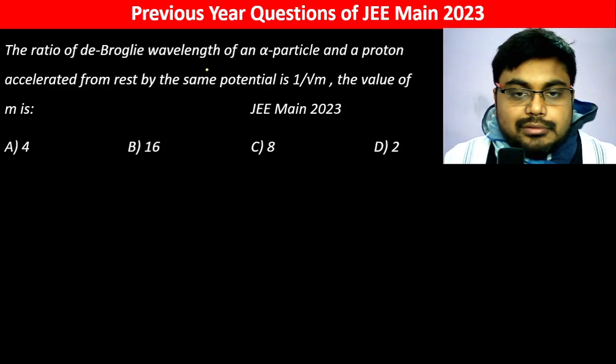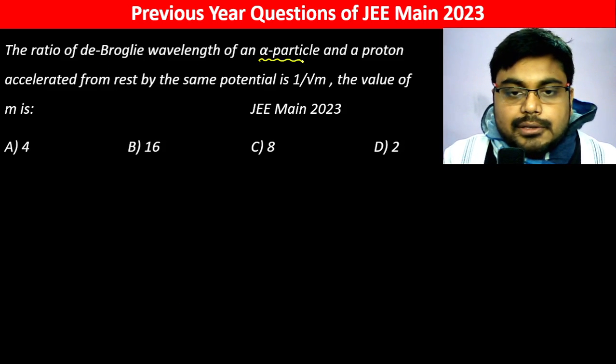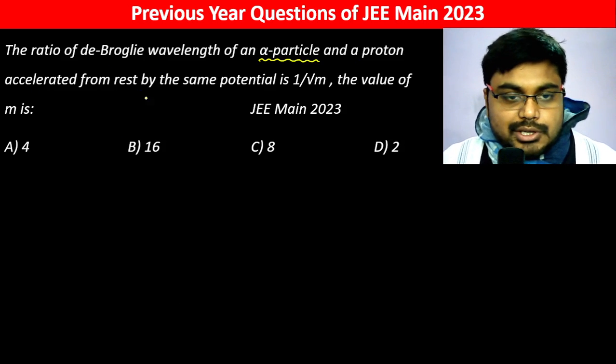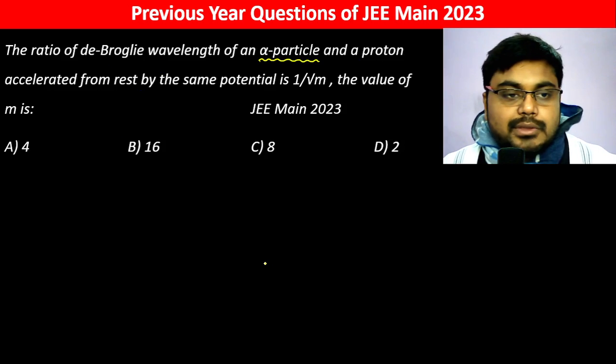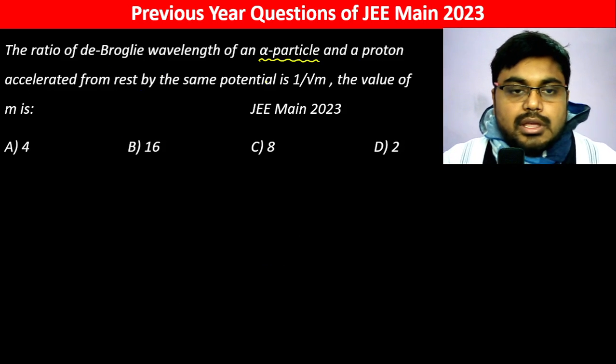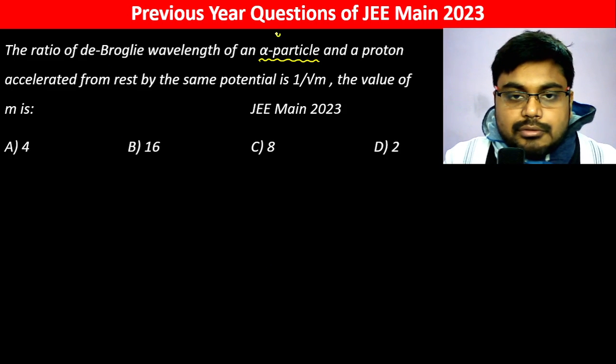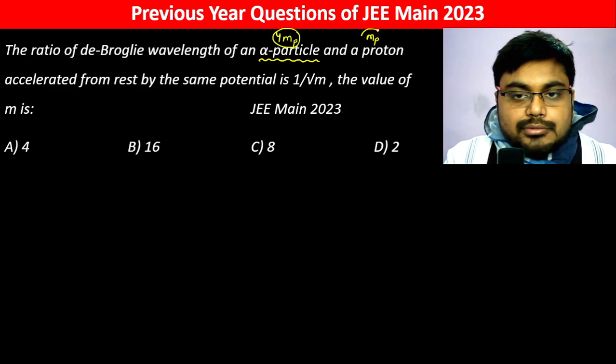The ratio of de Broglie wavelength of an alpha particle and a proton accelerated from rest is 1 by root m. The value of m: alpha particle mass is 4 times mass of proton.